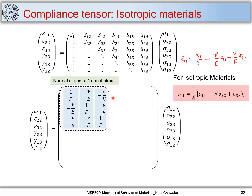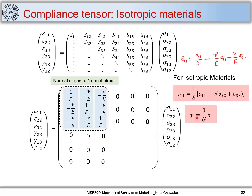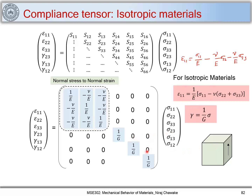The remaining zero components are marked accordingly. For the shear terms: γ₂₃ is related to σ₂₃ using shear modulus, giving 1/G. Similarly γ₁₃ relates to σ₁₃ as 1/G. We invoke the principle of shear decoupling — a shear stress on one plane does not cause shear strain on the other two planes. This applies for isotropic cubic materials, so those off-diagonal shear components are zero.